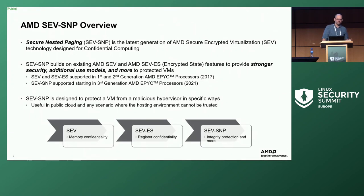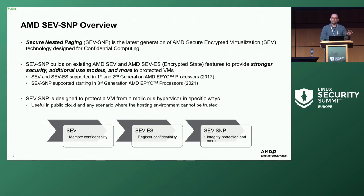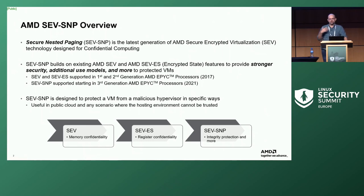To overview what SEV is, we have three different features that kind of stack on top of each other. The first one is SEV, which provides the confidentiality of the confidential compute solution through memory encryption, covering only the memory of a guest. SEV-ES was introduced after that and includes confidentiality and somewhat integrity of the registers of the guest. These two features have a lighter weight threat model. In SNP we introduce the idea of both confidentiality and integrity for a guest. SEV and SEV-ES were introduced in first and second generation EPYC, and SNP was introduced in the third generation.